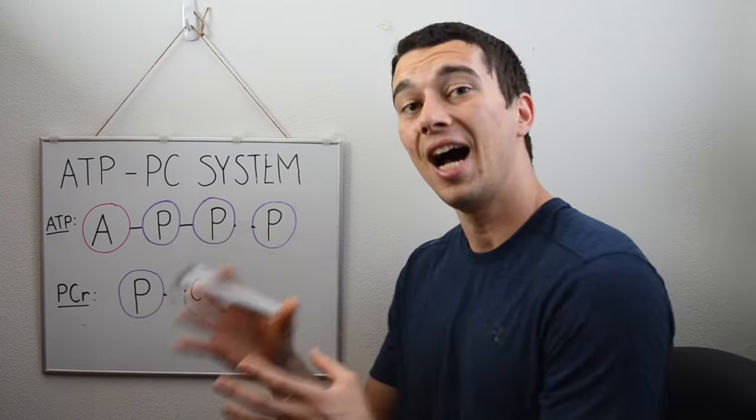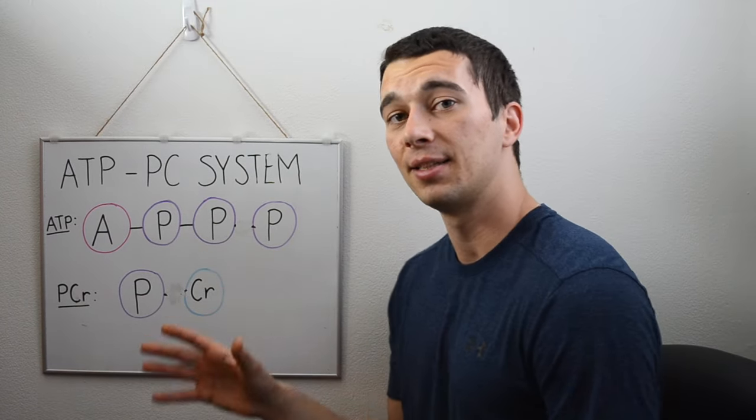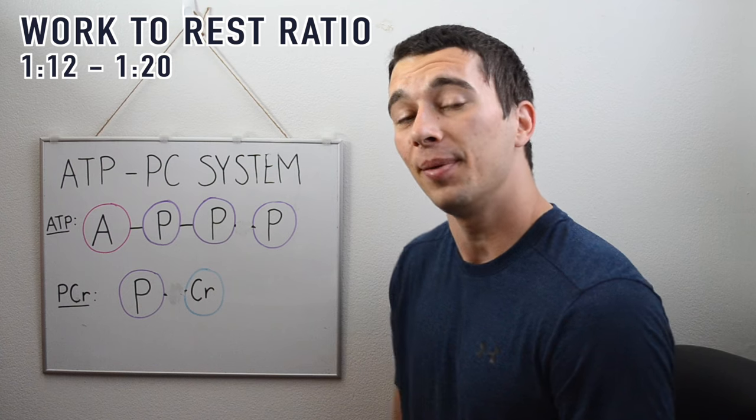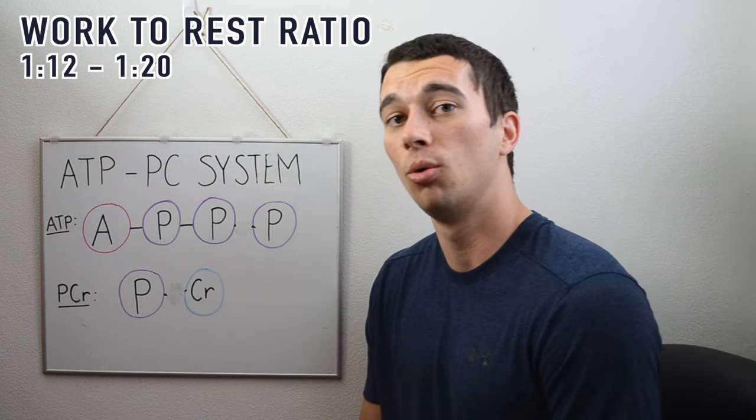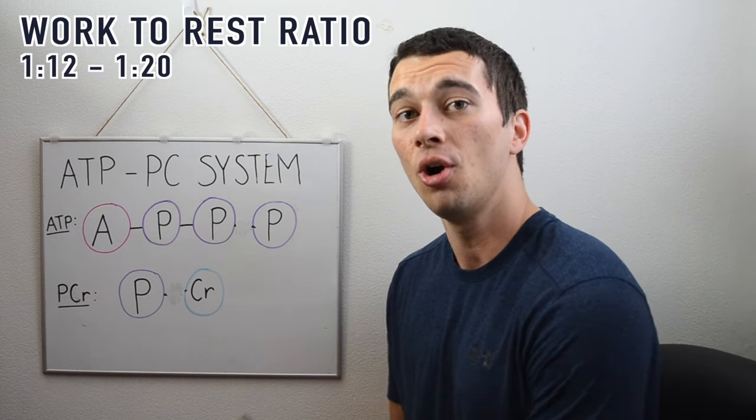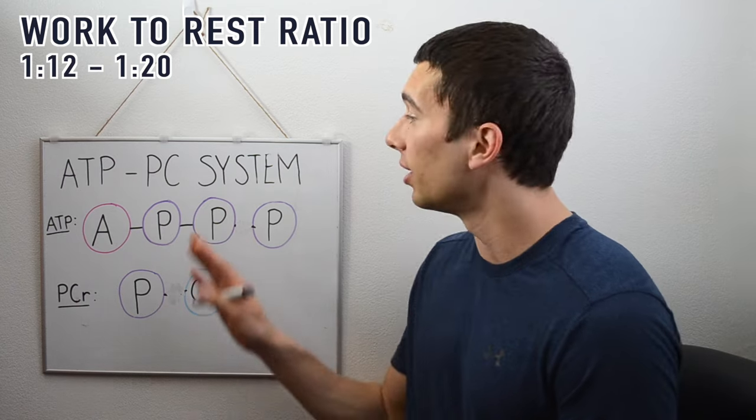Once these bonds are broken, it takes time to reform these bonds, and that's why this system requires a lot of rest. Typically we're going to use a 1 to 12 to a 1 to 20 work-to-rest ratio when we're programming for the ATP-PC system.